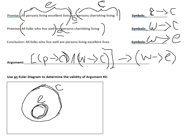The second premise says all folks who live well are persons who cherish living. So as long as the folks who live well cherish living, they're inside this outer circle — that satisfies the premise. It could be that a person who lives well is in the outer circle only, or also inside the inner circle, or partway in both sets. We satisfy that second premise with any one of these options — these are all examples of people that live well and cherish living.